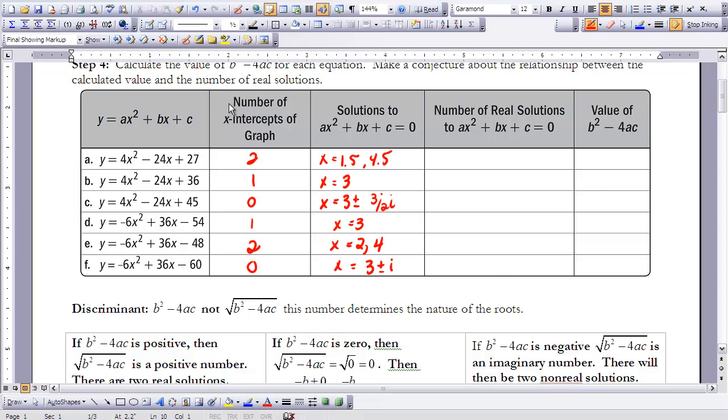So some patterns that you may have seen when you worked through this: when you didn't have any x-intercepts, so we had zero x-intercepts, our value was negative. We had two x-intercepts when our value was positive. And I had only one x-intercept when my value for b squared minus 4ac was zero. This value of b squared minus 4ac is called the discriminant. We alluded to it before in one of your previous lessons.